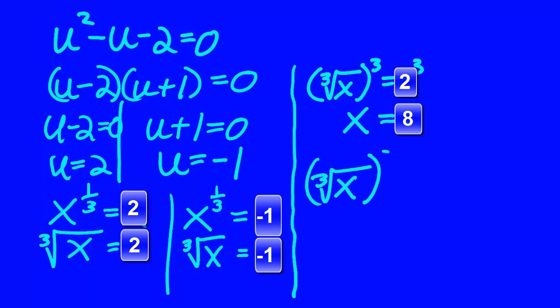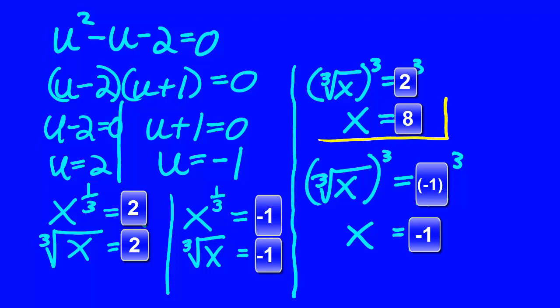Again, cube both sides of the equation and we find that x equals -1. So our solutions are 8 and -1.